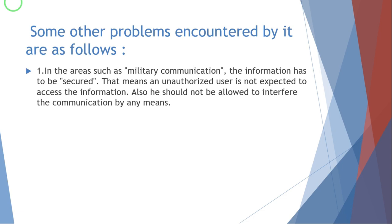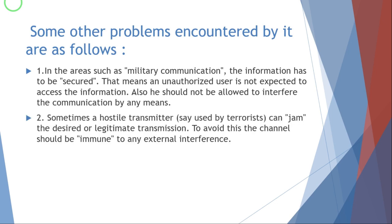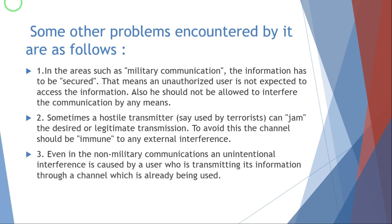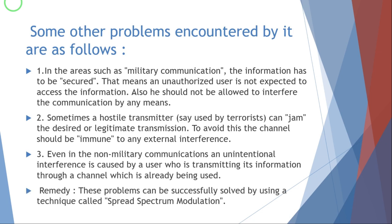In areas such as military communication, the information has to be secure — an unauthorized user is not expected to access the information, and should not be allowed to interfere with the communication. Also, a hostile transmitter, say any terrorist, can jam the desired or legitimate transmission. To avoid this, the channel should be immune to any external interference. Even in non-military communication, unintentional interference is caused by a user transmitting over a channel already in use. These all problems can be successfully solved by using a technique called spread spectrum modulation.